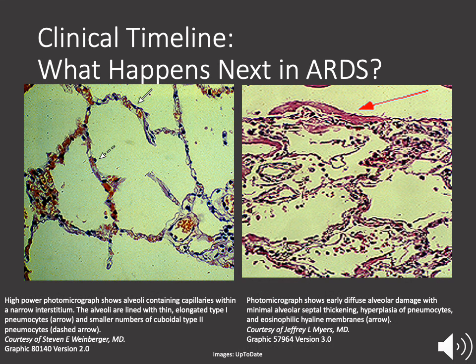In addition to hypoxemia, when lung tissue, such as the alveoli and the interstitium, become fluid-filled and inflamed, the lung compliance will decrease. Decreased lung compliance leads to an increased risk of barotrauma. Additionally, there can be pulmonary vascular congestion and disruption, leading to pulmonary hypertension.